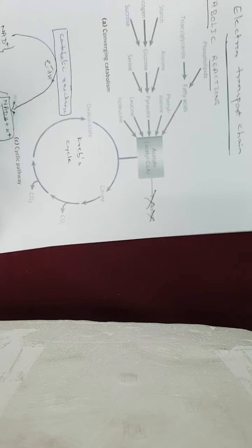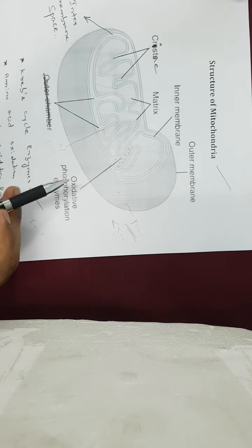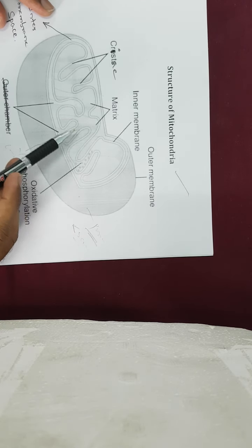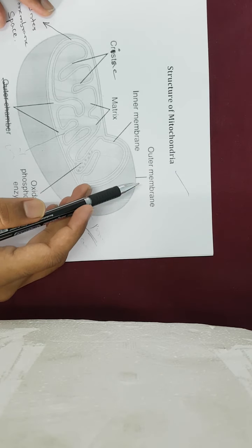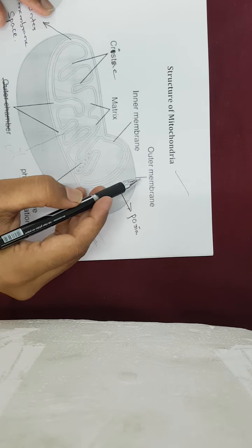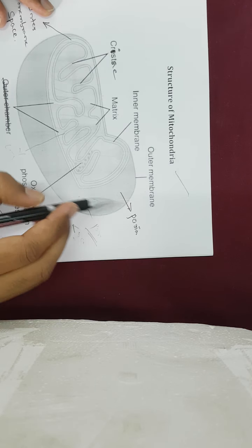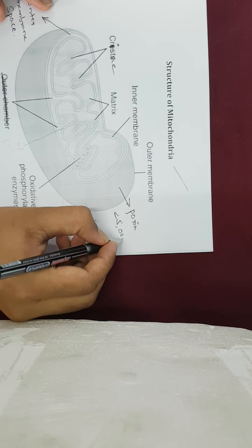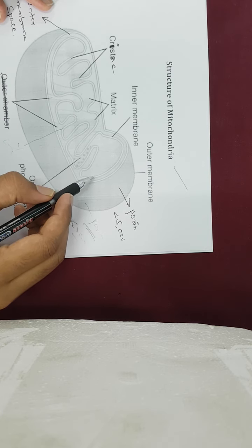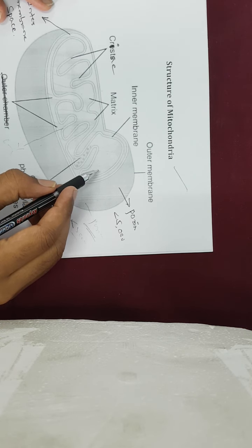Before understanding the electron transport chain in detail, we need to understand the structure of the mitochondria briefly. The mitochondria has two membranes: the outer membrane and the inner membrane. The outer membrane has small pores called porin channels. Through the porin channels, molecules below the size of 5000 Daltons can enter into the mitochondria. The inner membrane, on the other hand, has specific transporters, and only molecules with a transporter can cross the inner membrane.